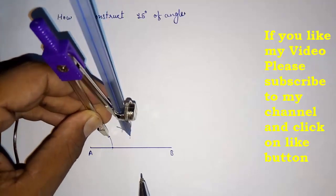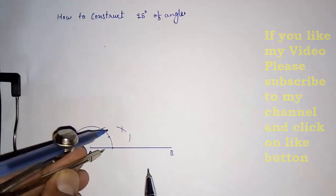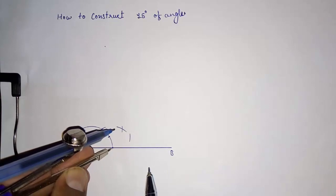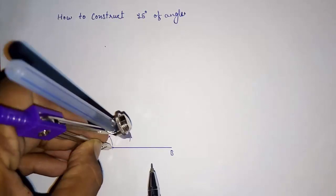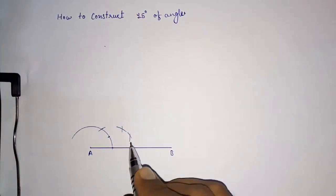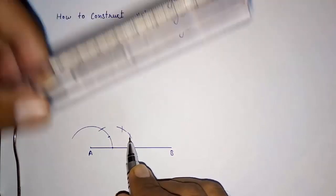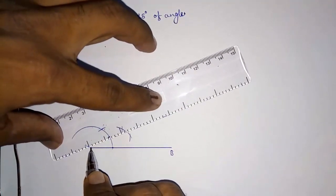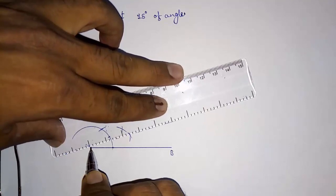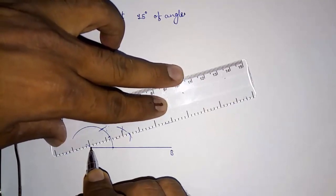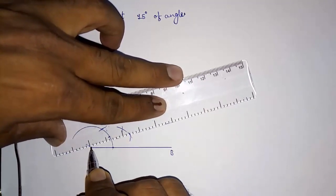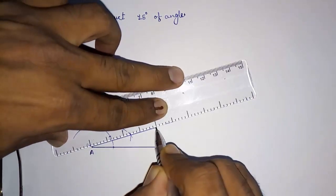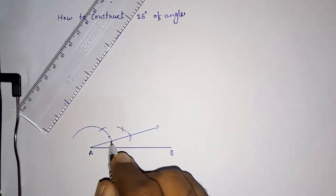Taking this 30-degree point, draw an arc like this. From zero also, draw another arc where both arcs intersect. Draw a line passing from A to this intersection. It is intersecting, and this angle will be 15 degrees.